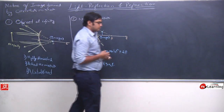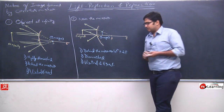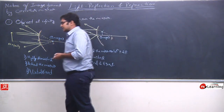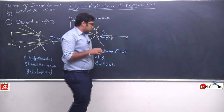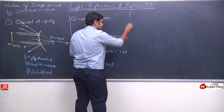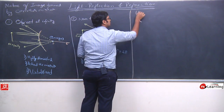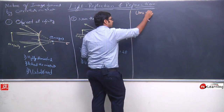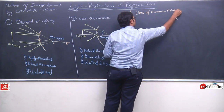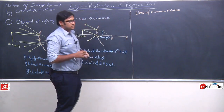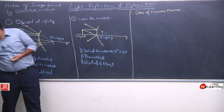So now we have understood how a convex mirror forms the image of an object. Now this is the beauty of spherical mirrors again - the size of the image depends on the position of the object. So can we use this somewhere? Yes, we can use convex mirror. Let us try to understand the uses of convex mirror.